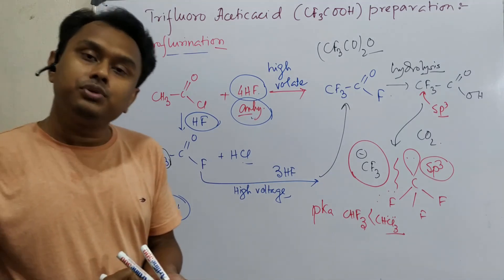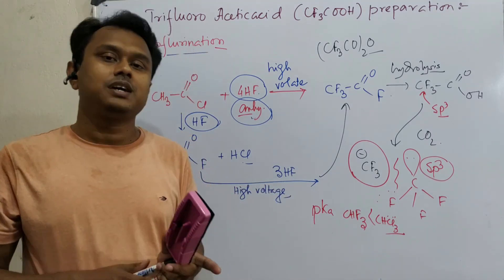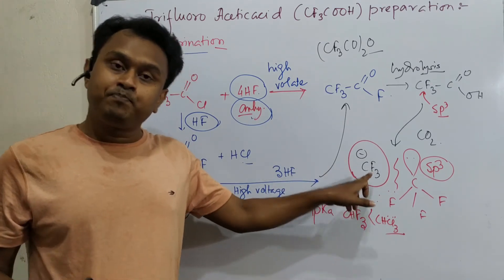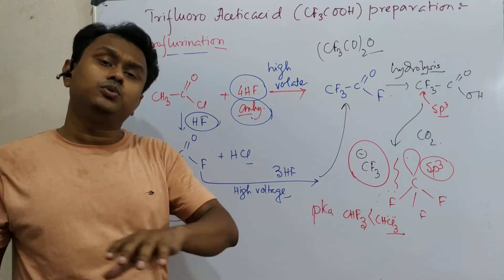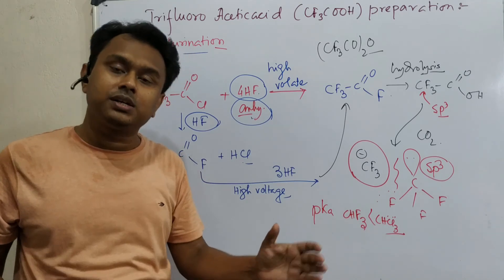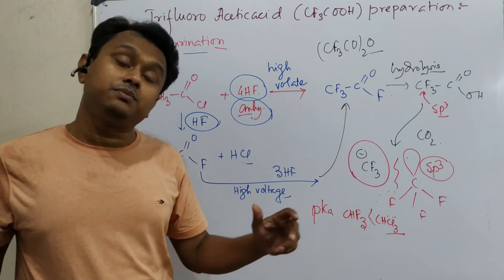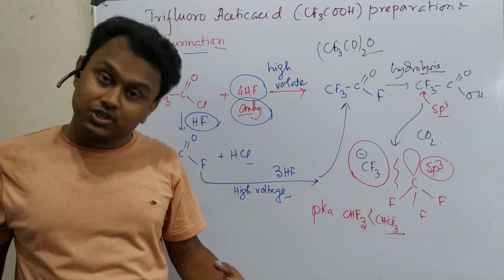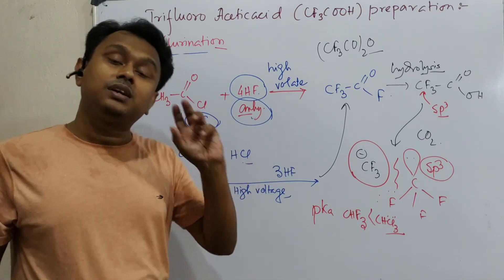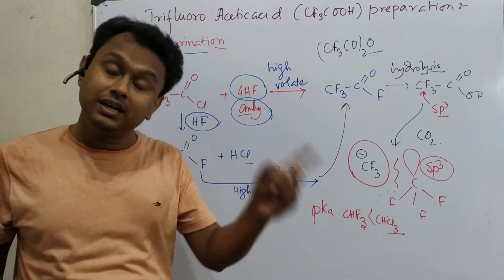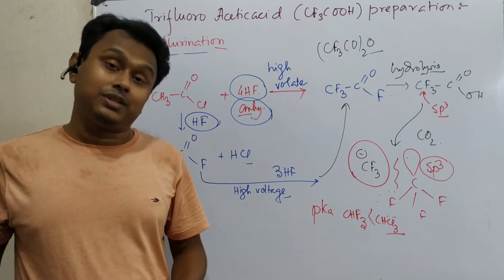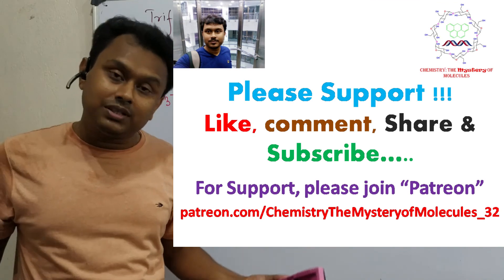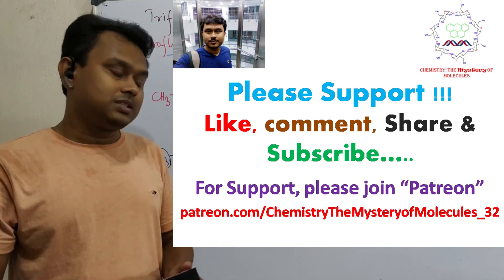Second thing, whenever we do any reaction we optimize reaction conditions such a way that our target product we get. Our reaction could be done in many conditions and changing conditions we can get completely different products. But that is the challenge for chemists, how to get the target product with maximum yield and minimum impurity. That's why billions of dollars are spent on research in chemistry. So this is the end of this discussion.